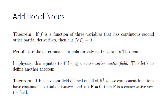Some additional theorems: if a function f of three variables has a continuous second-order partial derivative, then the curl of the gradient of f is equal to zero. This can be proven using the determinant formula and Clairaut's theorem. In physics, this equates to f being a conservative vector field. Furthermore, if f is a vector field on all of R3 whose component functions have continuous partial derivatives and the curl of f equals zero, then f is a conservative vector field.